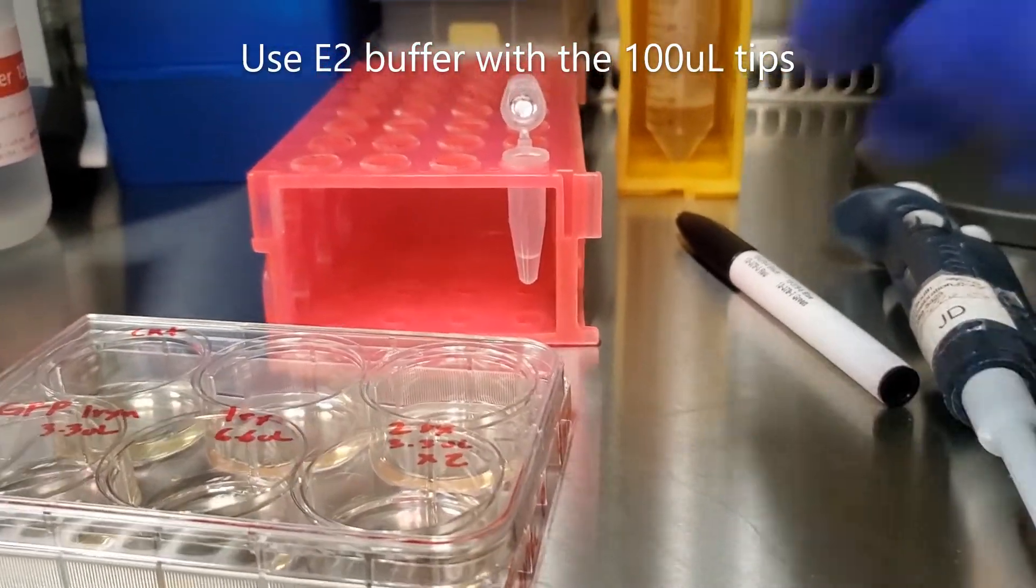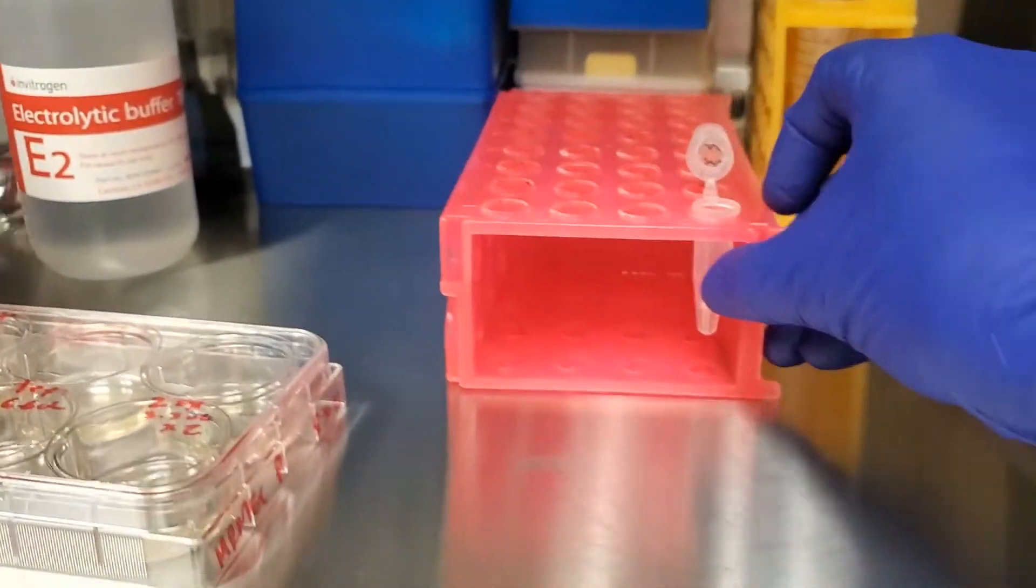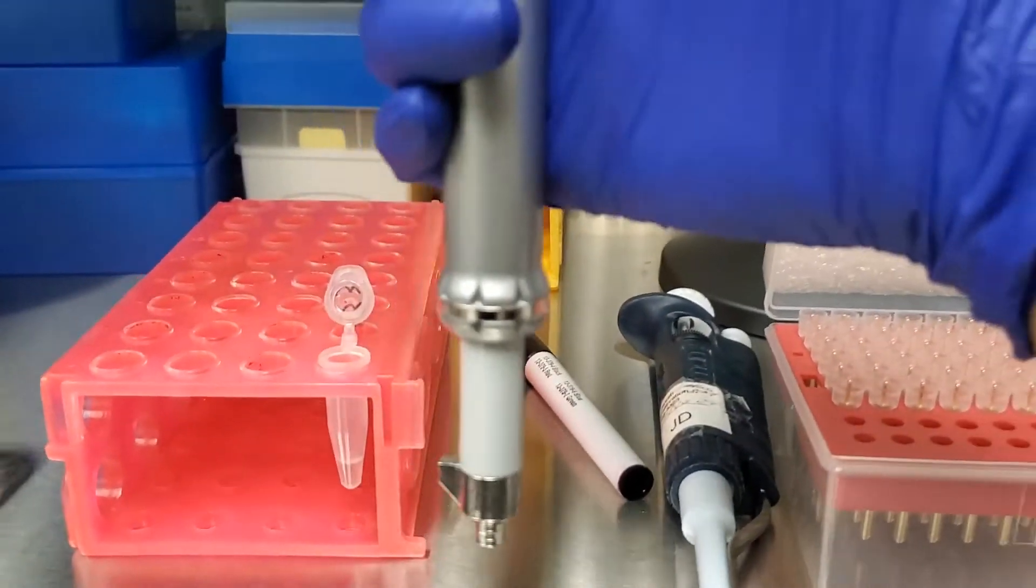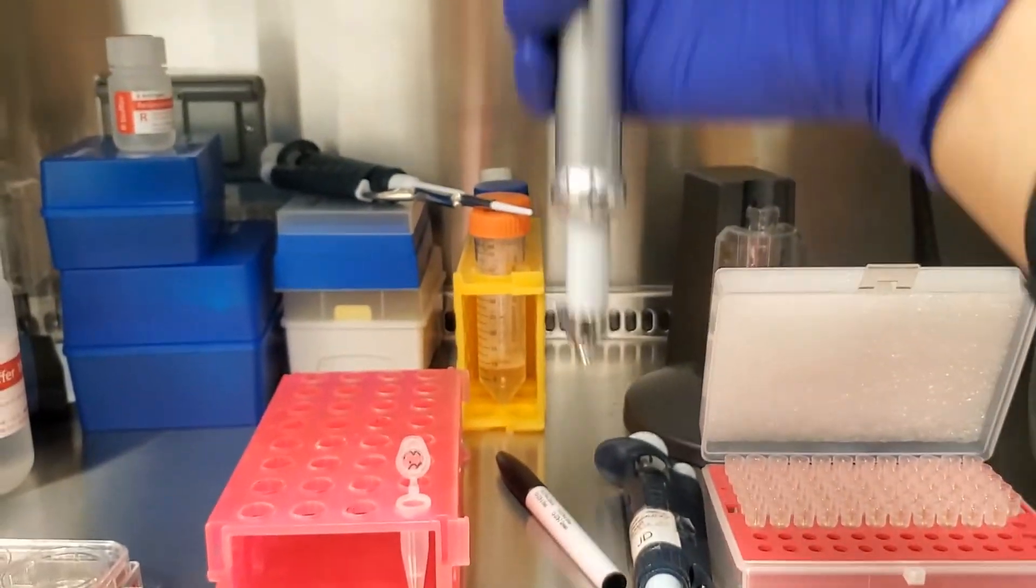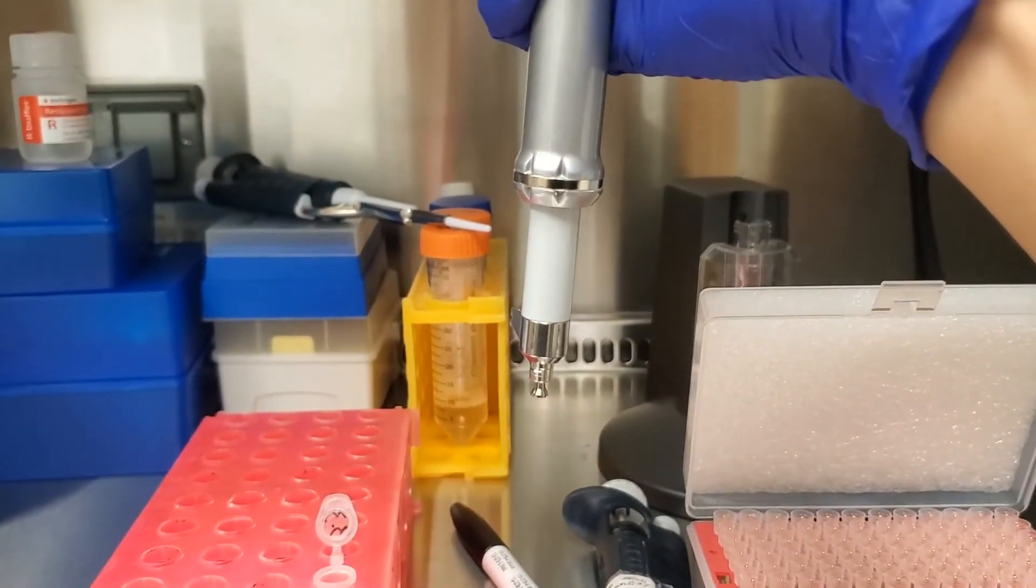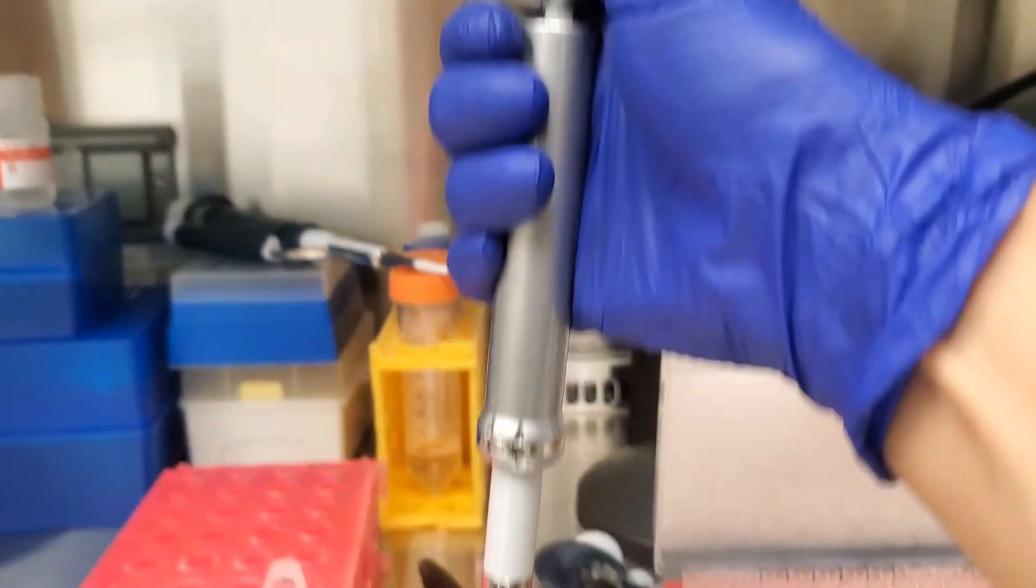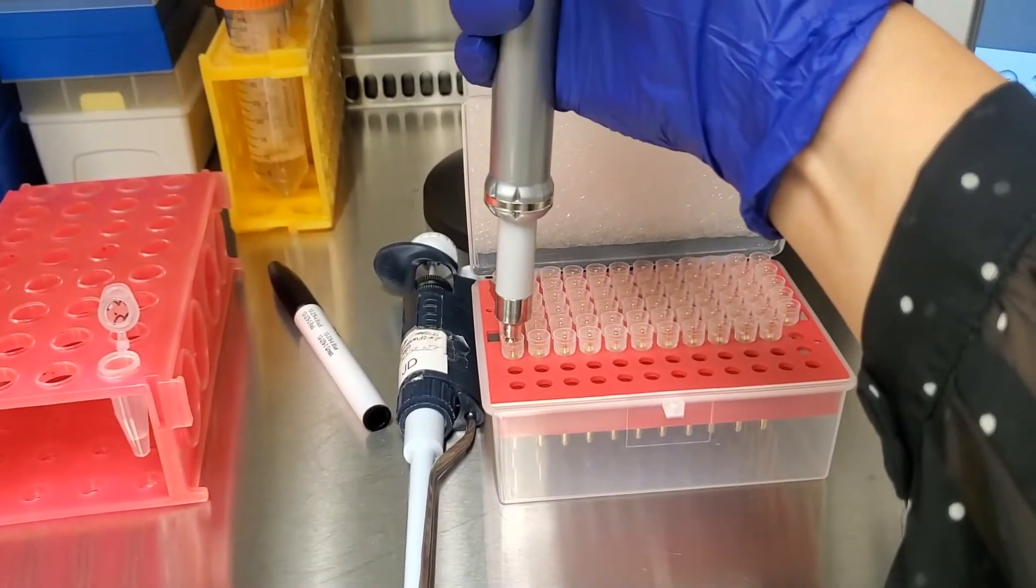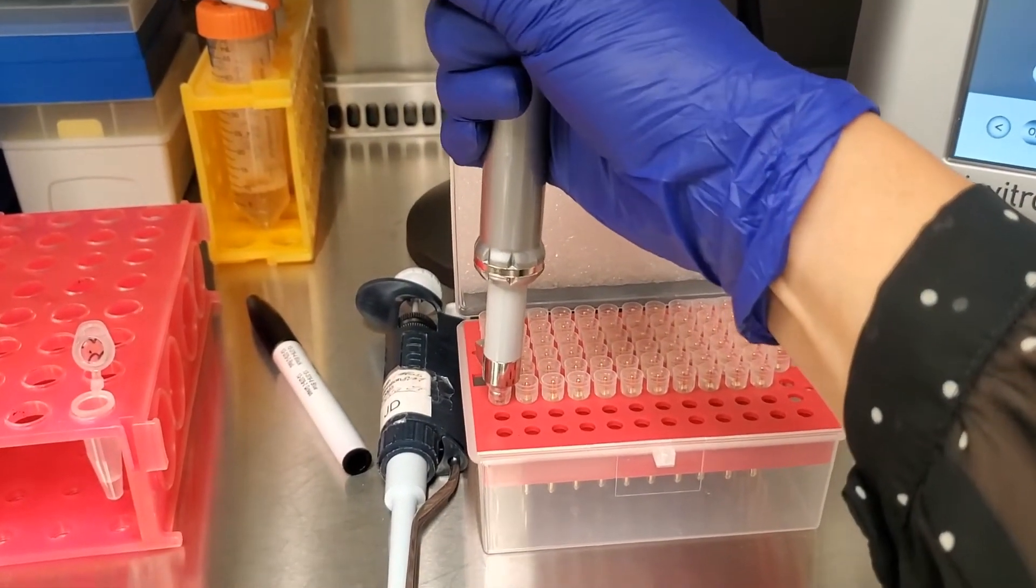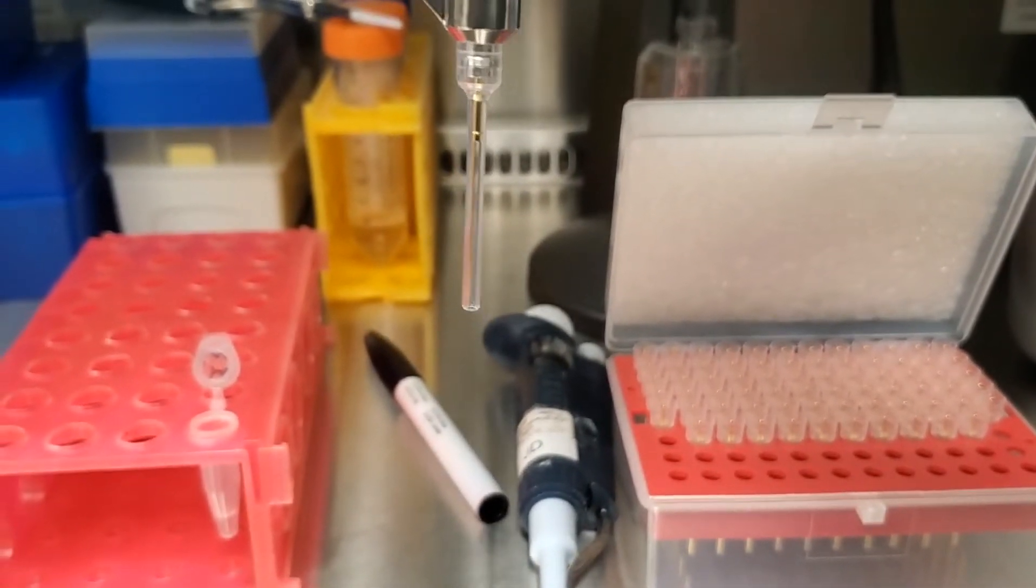We're going to go ahead and do the one for GFP. Here is your pipetter. Make sure that you press all the way down. You're going to see that come out. There's a first stop, second stop. Once you have that, you go up here, grab it, and it's going to make a clicky sound. Note that that golden part is all the way in the top.